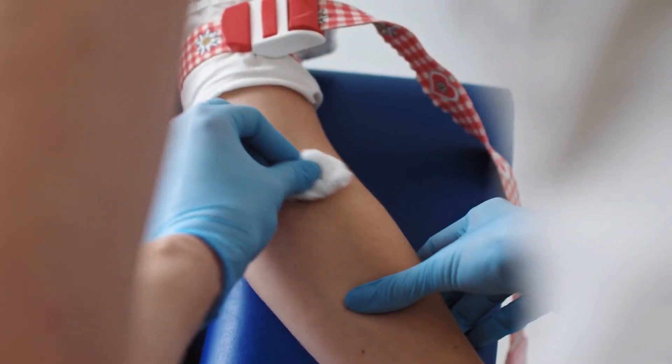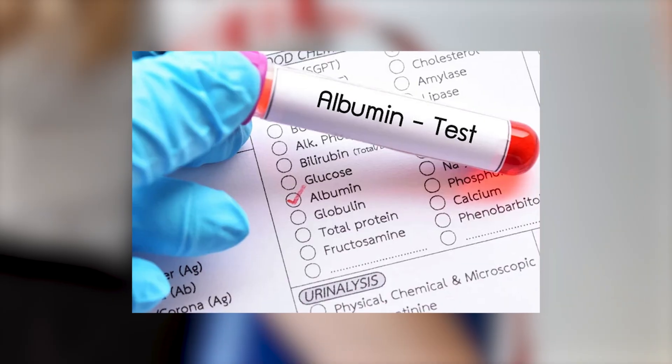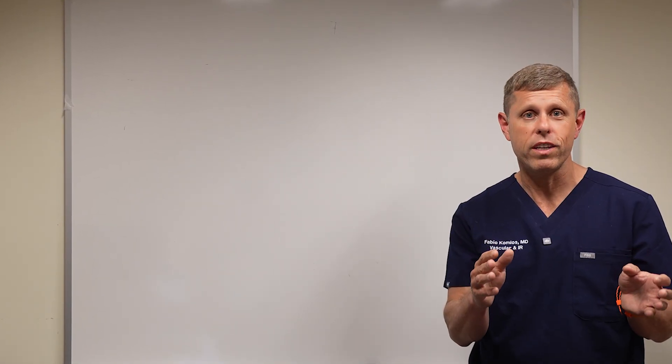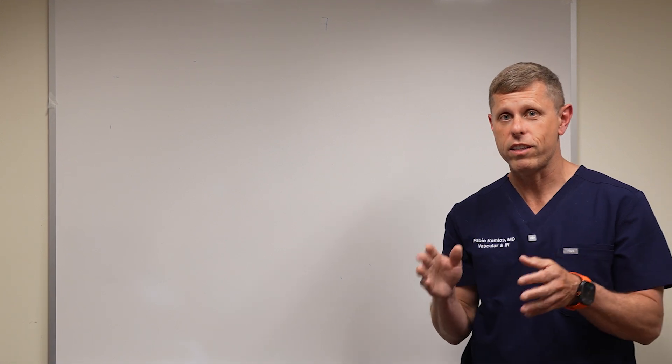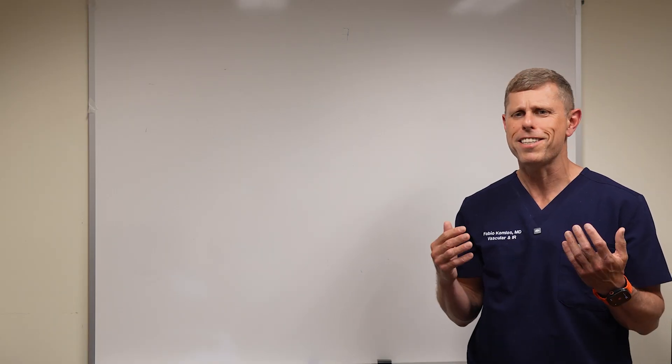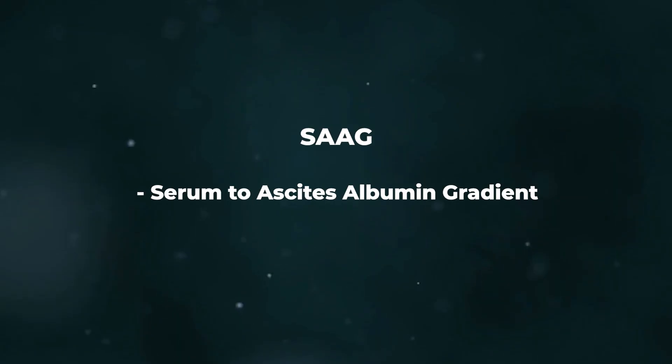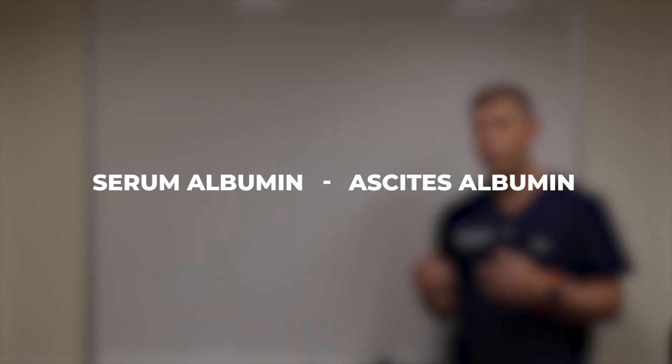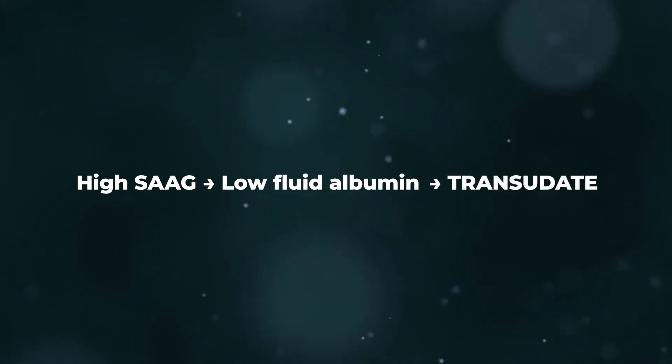We also need to do a blood test at the same time to check for the albumin, because that's exactly how we know if this is a transudate or an exudate, because we compare the albumin in the fluid to the albumin in your blood. And then we do a little calculation to determine what is the SAAG. What is a SAAG? A SAAG is a serum to ascites albumin gradient. So a SAAG is the albumin in your blood minus the albumin in your fluid. If that difference is high, meaning that the albumin in the fluid is very low, that means you have a transudate.